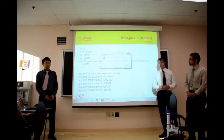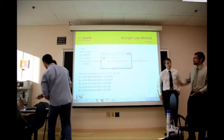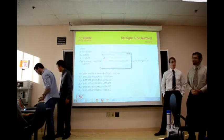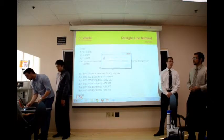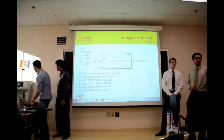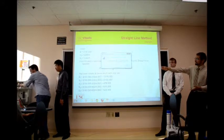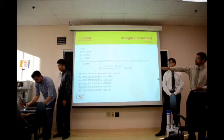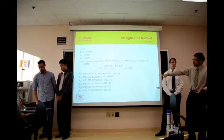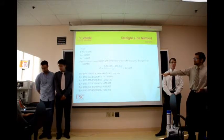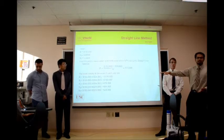Dividing by five gives you $24,000 per year in depreciation. At the bottom of the table you can see the book value — how much the asset is worth at the end of each year. At the end of the first year, the asset is worth $126,000, and if you continue all the way down to the end of the service life, you'll find the asset is worth exactly its salvage value.